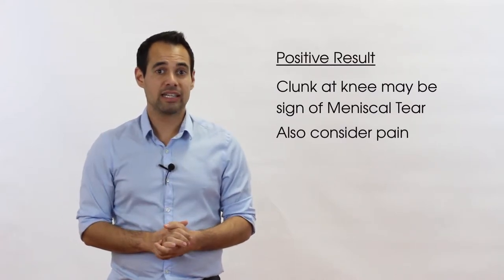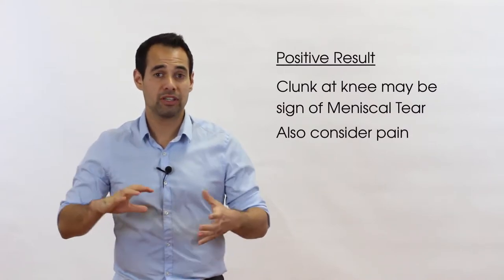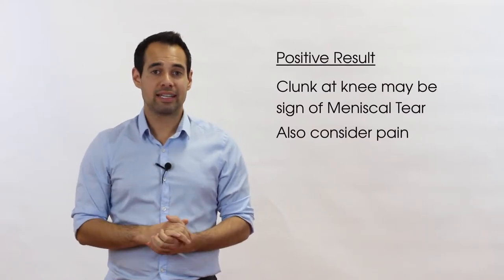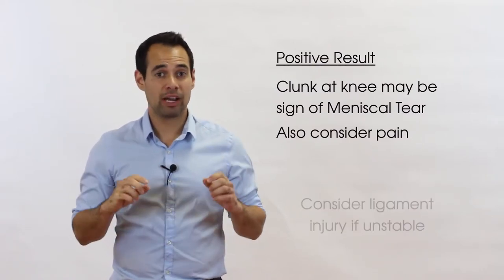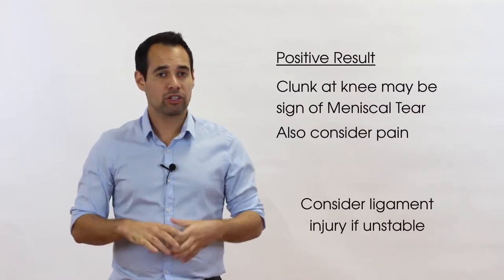One other thing to consider is if your patient is unstable during this movement. So for example, does their knee buckle? What that might be due to is a tear of a particular ligament, and that might well be the ACL, the anterior cruciate ligament. Just bear that in mind.